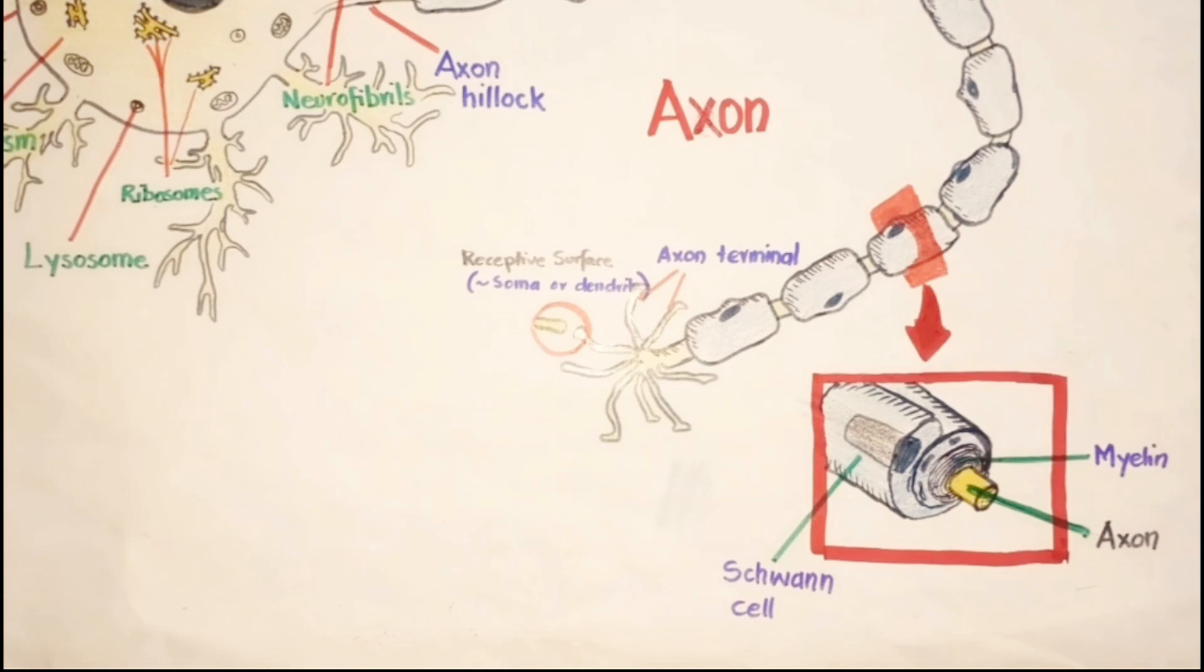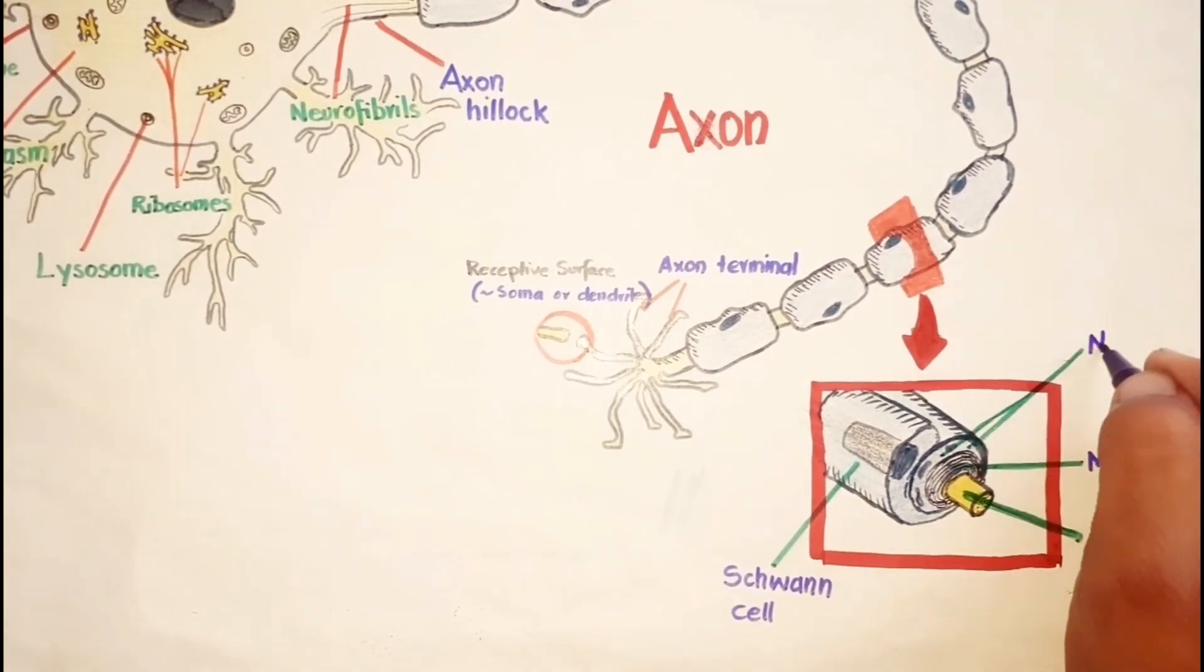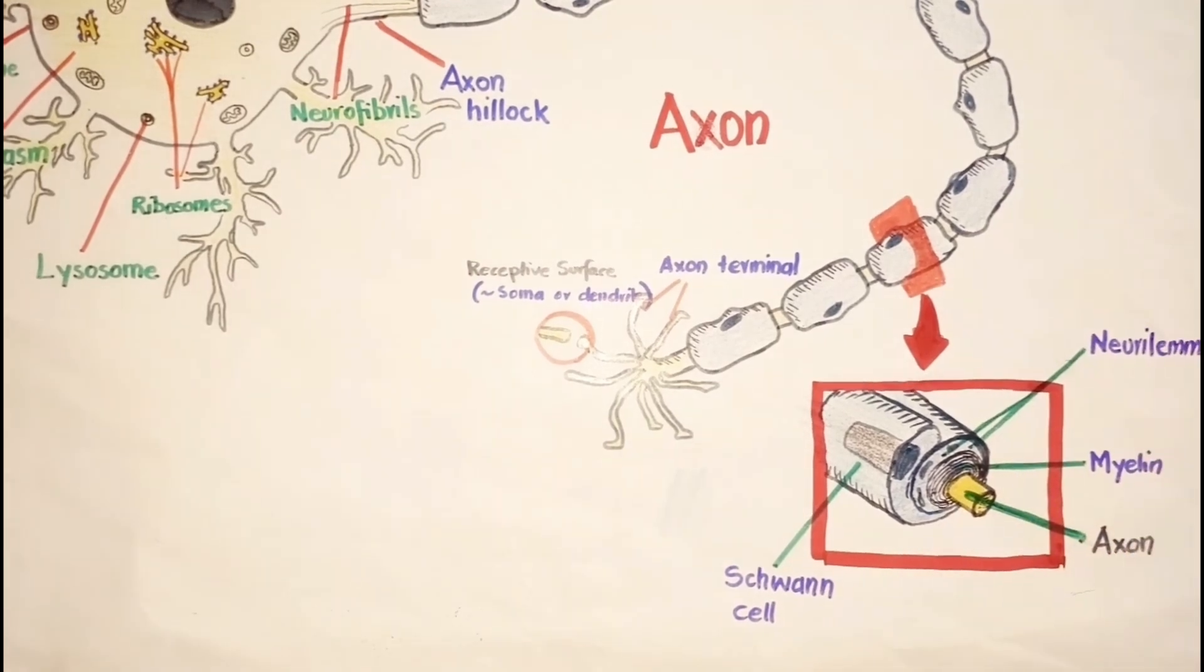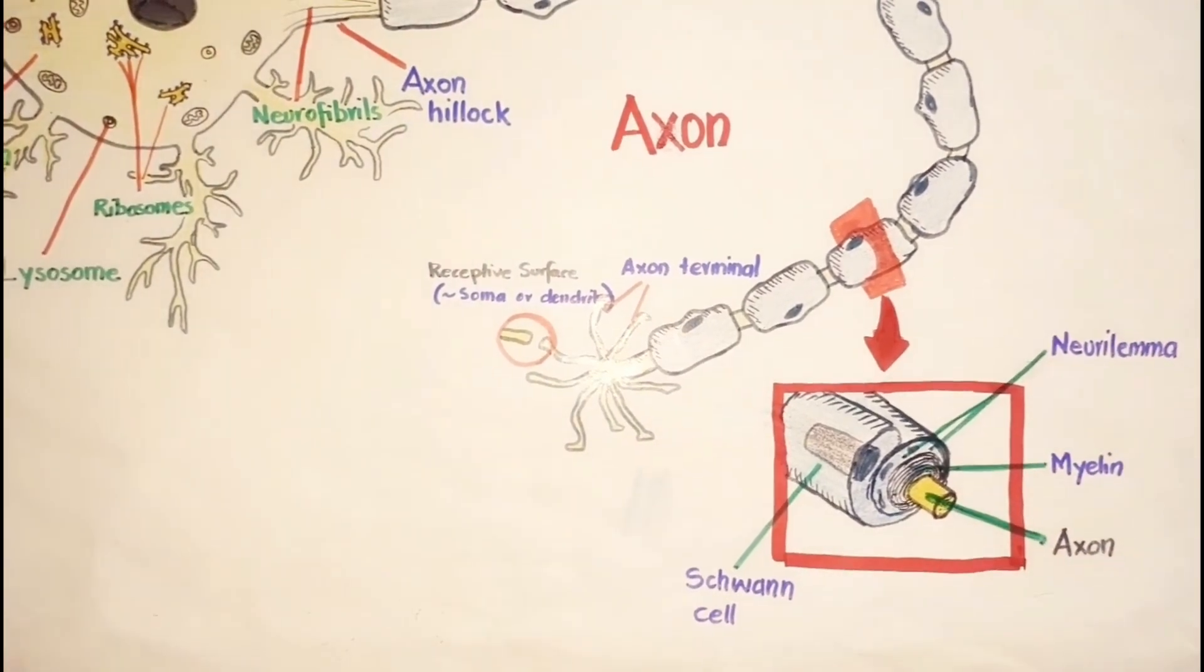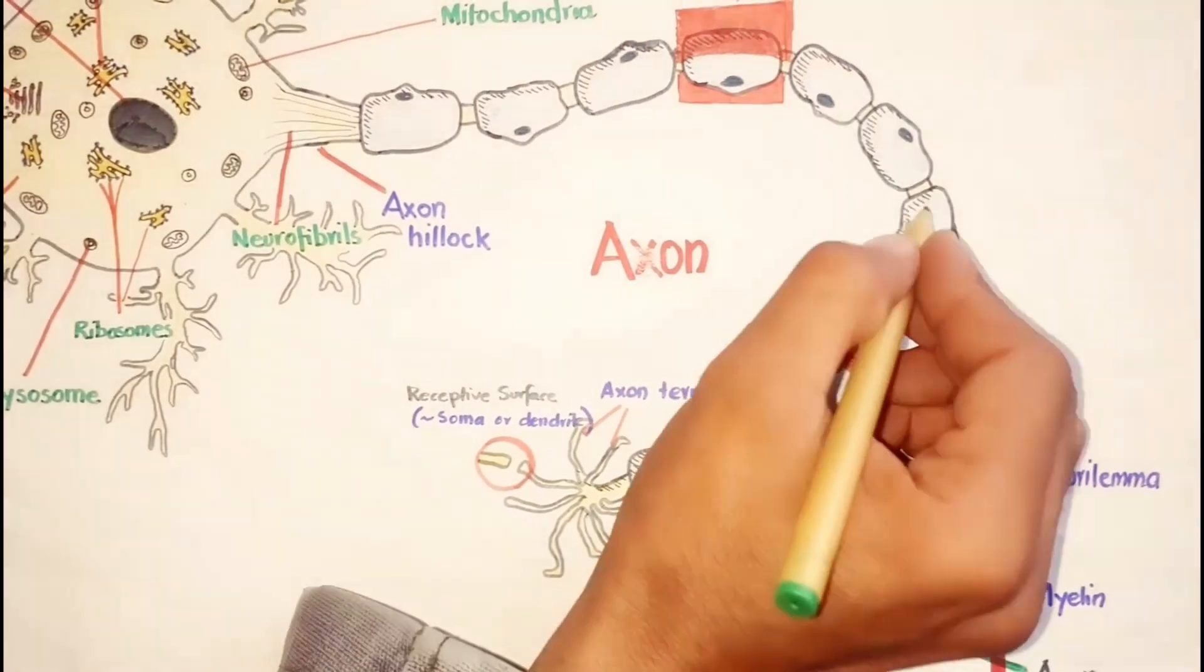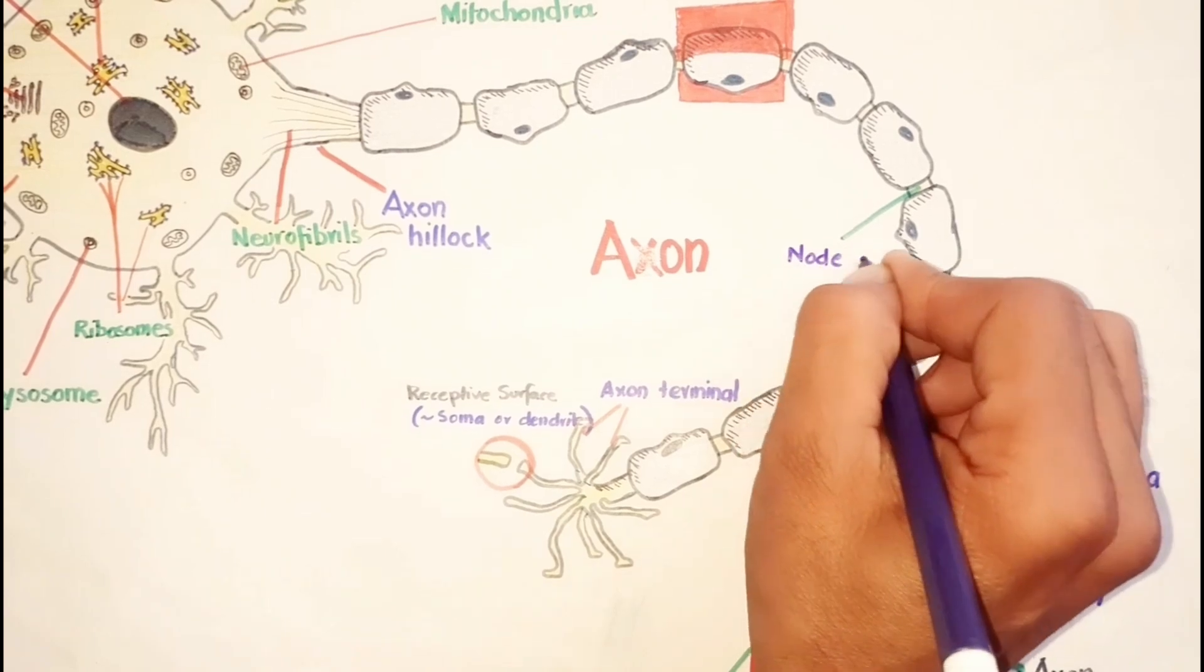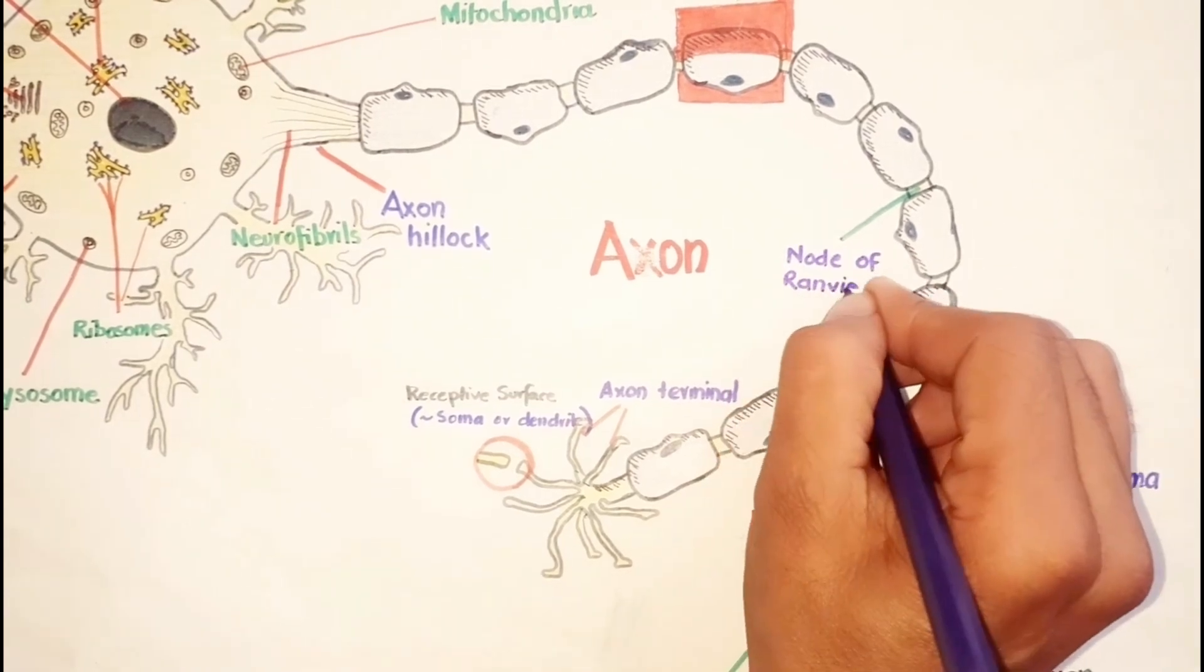The parts of the Schwann cells that contain most of the cytoplasm and the nuclei remain outside the myelin sheath and compose a neurolemma or neurolemmal sheath which surrounds the myelin sheath. The narrow gaps between the Schwann cells are called nodes of Ranvier.